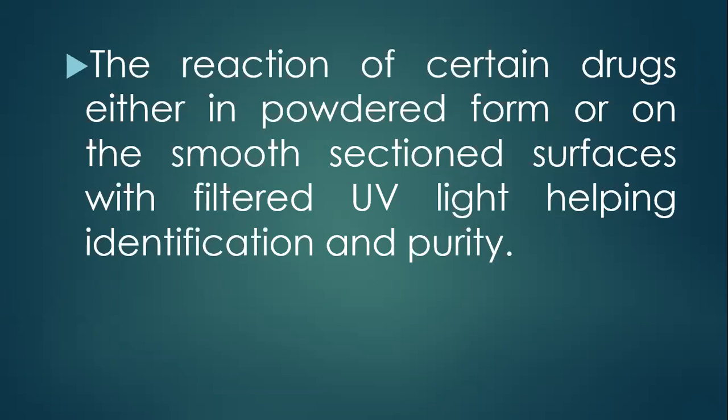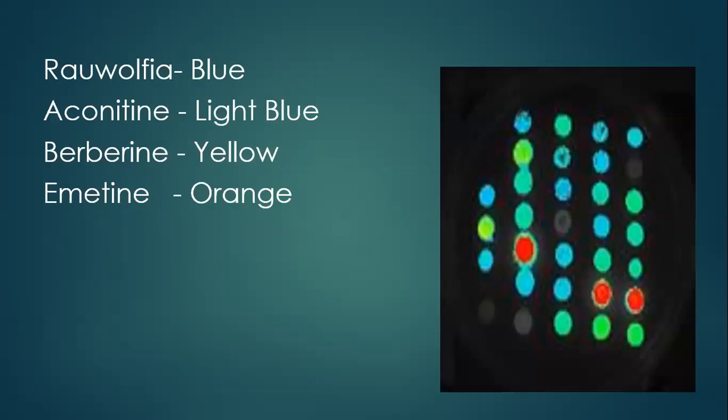A distinct specific fluorescence or color gives a suggestion of a particular drug substance or alkaloid. For example, Rauwolfia will give a blue color. Aconitine, an alkaloid, will give a light blue color. Berberine, an alkaloid found in many drug substances like Berberis vulgaris, Berberis aquifolium, and Hydrastis, will give a yellow color. Emetine, which is an alkaloid of Ipecac, will give an orange color.